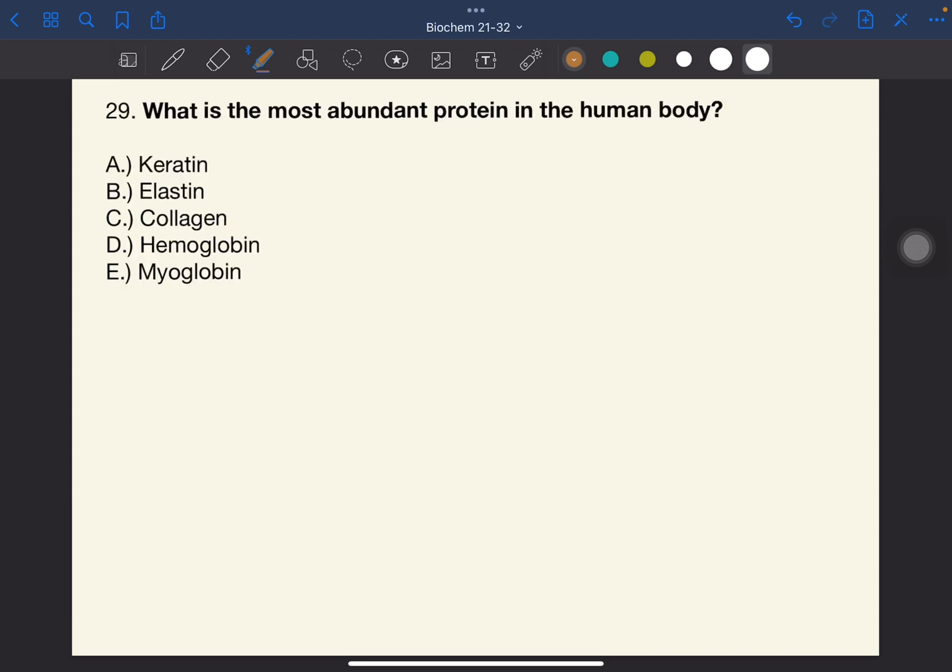Number 29. What is the most abundant protein in the human body? The answer to this one is C, collagen.